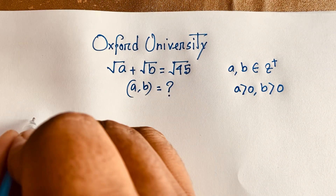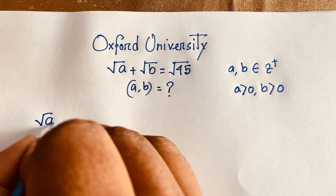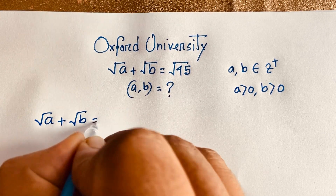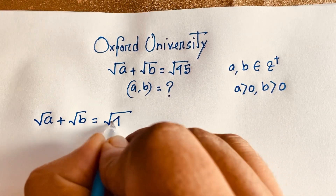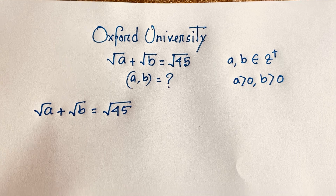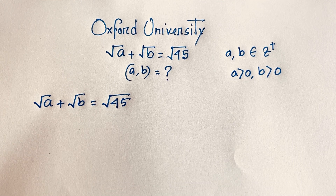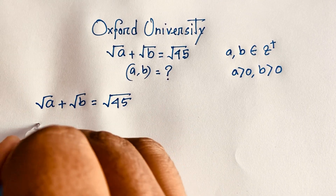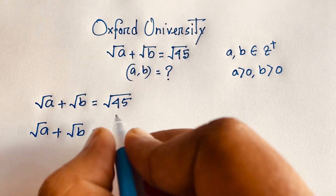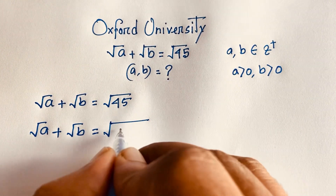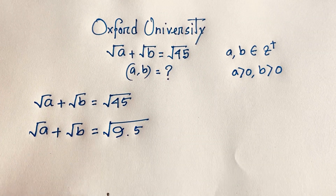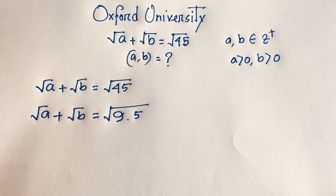Our question is: square root A plus square root B is equal to square root 45. I can see that square root 45 equals square root of 9 times 5, which is square root 45.